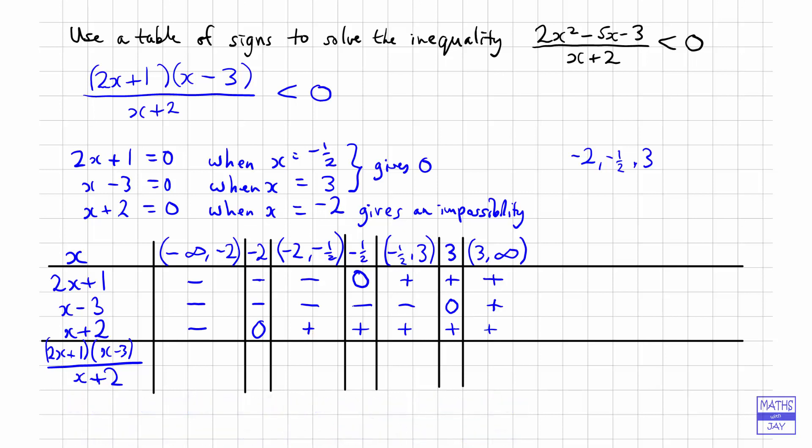Okay, so now we think about what happens when we combine all of these signs. So looking at the actual fraction that we've got, we're multiplying the top two numbers together and then dividing by the bottom number. So we're multiplying a minus by a minus in the first column and then dividing by a minus. So the two minuses cancel each other out and we're left with a minus. So what that is saying is that our fraction is negative when x is less than minus 2.